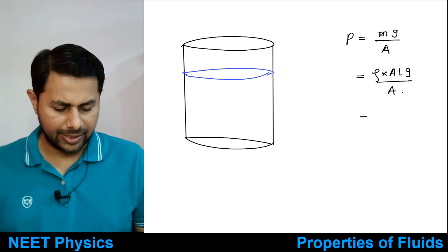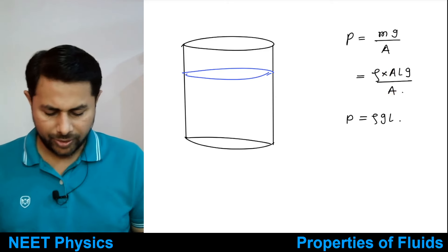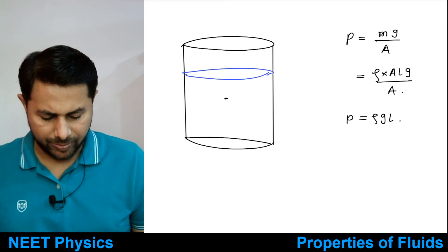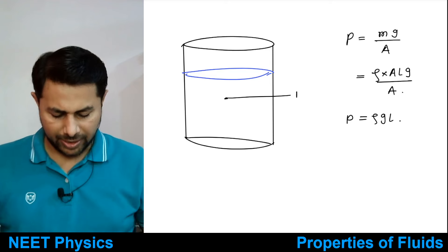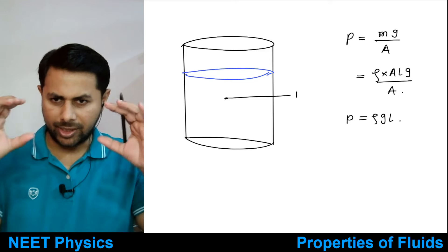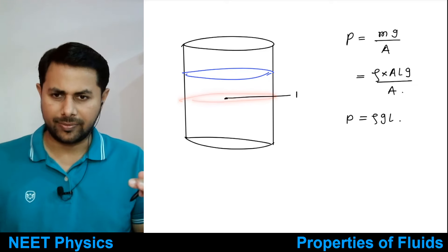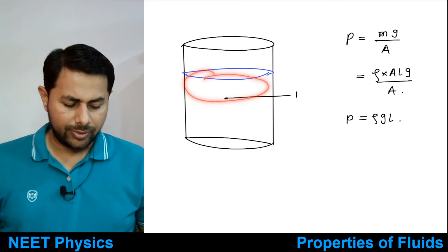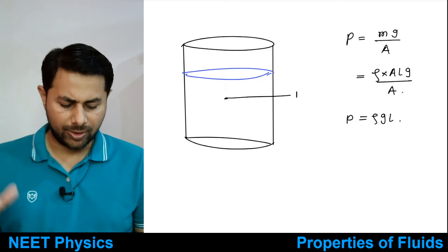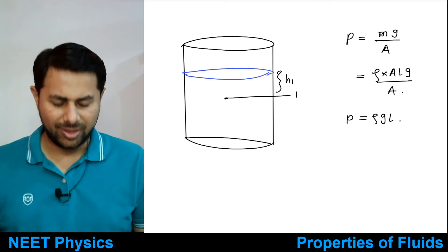Area gets cancelled out and that is why you get rho g times l. Now, what is this l? Suppose you want to find out pressure at some point — say point 1. Then pressure at that point would be equal to the weight of the liquid column just above it, divided by its area in contact. That will be equal to rho g multiplied by l1, which is the height of this column. Let us say that distance is h1.